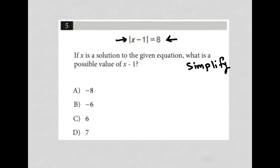Well, if x were equal to 9, if I put a 9 in here for x, 9 minus 1 would equal 8, so that would work. I could also say x is equal to negative 7, because if I put a negative 7 in for x, then negative 7 minus 1 is negative 8, but the absolute value of negative 8 is positive 8. So these are the two x values that I could get.